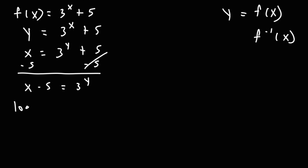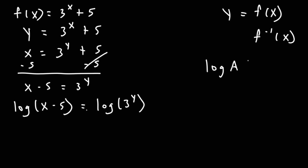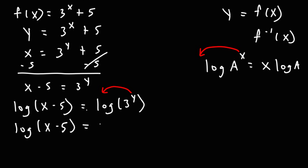In order to get that variable by itself, we need to use logs. So I'm going to take the log of both sides. On the left I'm going to have the log of x minus 5, and on the right side the log of 3 raised to the y. Using the property that log(a^x) = x times log(a), once you have a log in front of an exponential variable you can move the variable to the front. So we're going to have log(x minus 5) is equal to y times log 3.